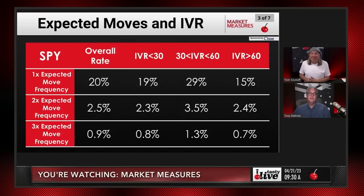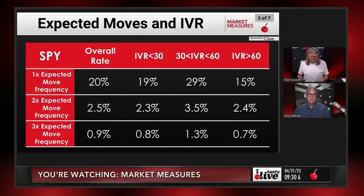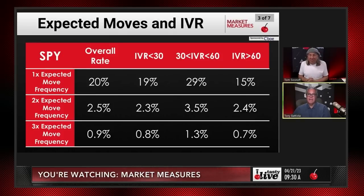When IVR is over 60, you take the least amount of outlier risk — that's why you've got to step up at that point, because you get the biggest rewards for the least amount of risk.